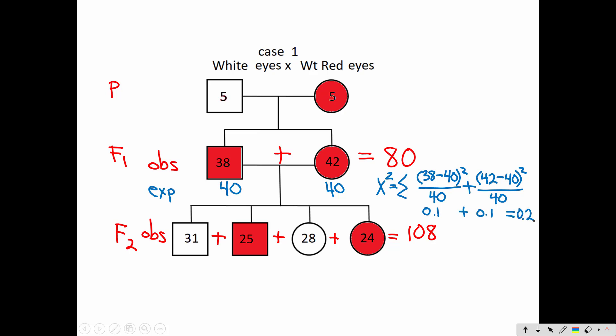When I add that calculation together, I get 0.1 for the first type of offspring. Also 0.1 for the second type of offspring, for a total chi-square value of 0.2. But what does that number mean?